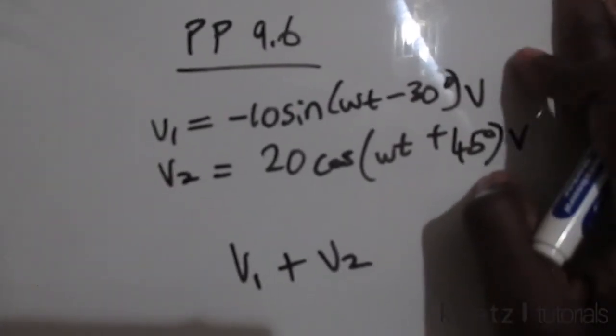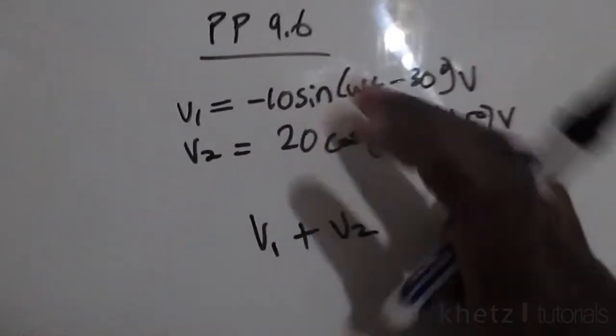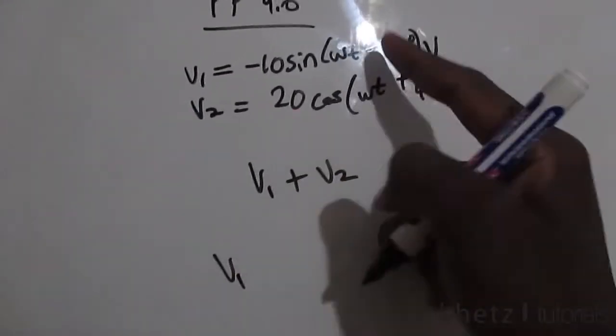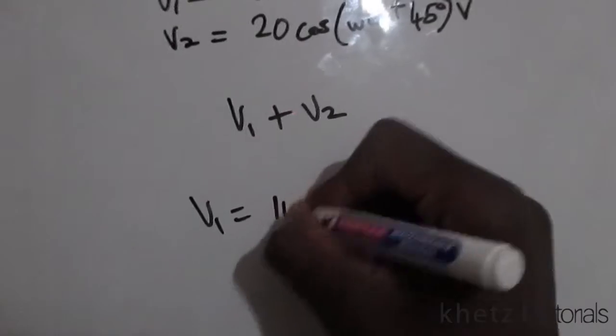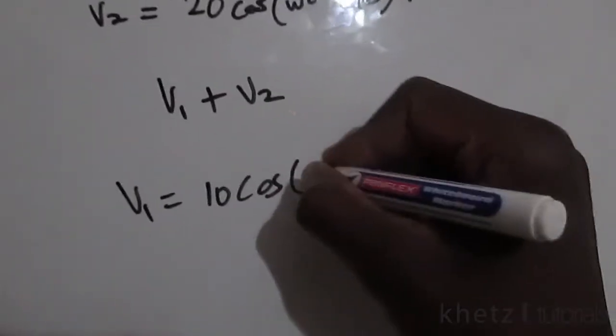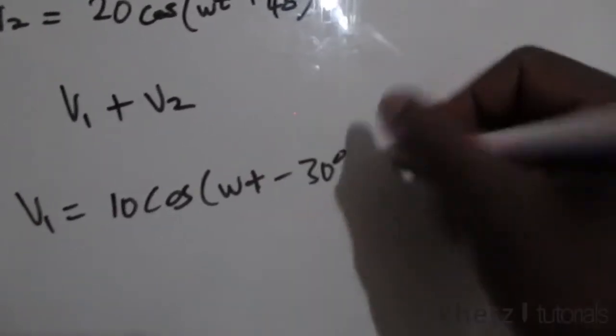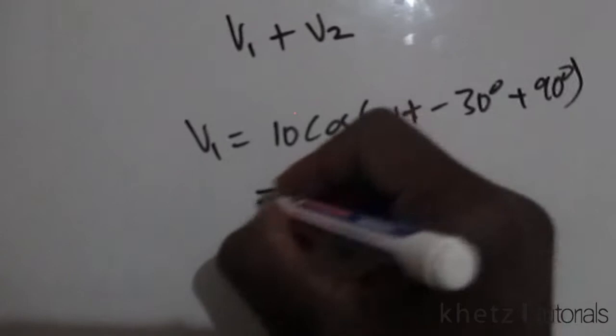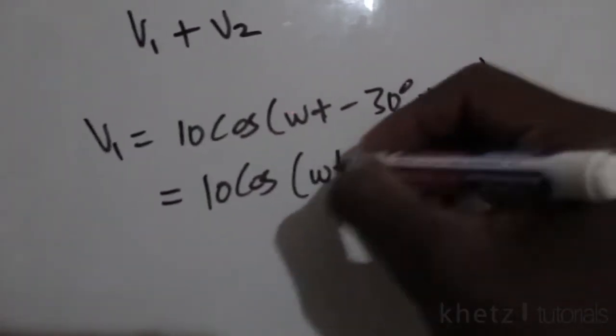Let's start by transforming the negative sine into a positive cosine. To do that, we add 90 degrees to the argument. We have -30 degrees, then add 90 degrees, so the resulting angle will be 60 degrees. So v1 = 10cos(ωt + 60°) and v2 is already in cosine form.